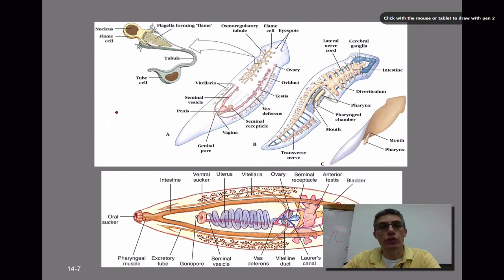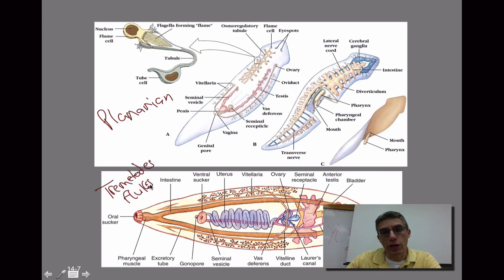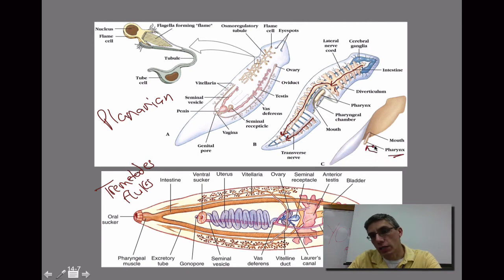The two diagrams here compare the digestive systems of the planarian on top and the trematodes, sometimes called flukes, on the bottom. Looking at the planarian, the digestive system starts here, and it has a single anterior intestine that branches off into two separate tubes. As noted before, it is considered a blind-ending tube, meaning there is no pore or opening where this tube empties out. The pharynx of planarians is able to extend to help the animal feed, extending through the ventral mouth.